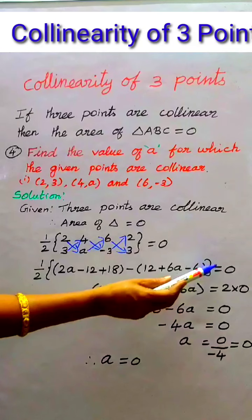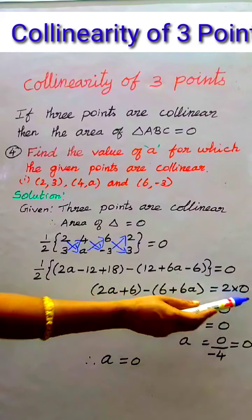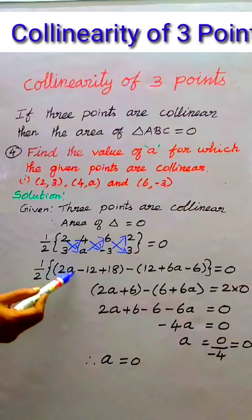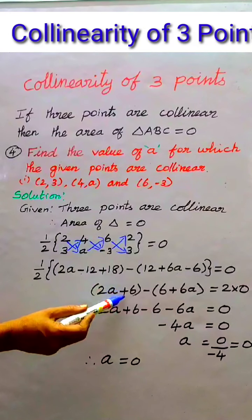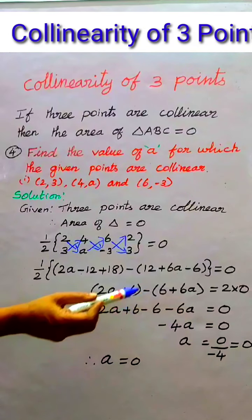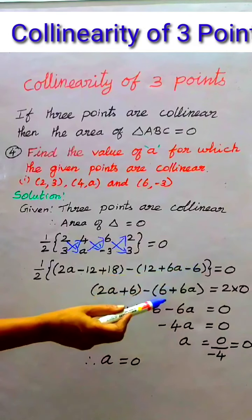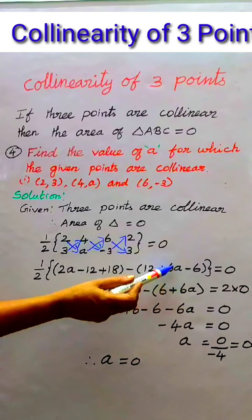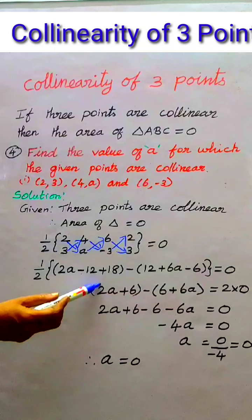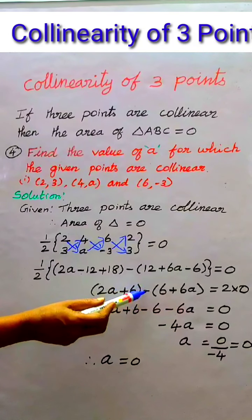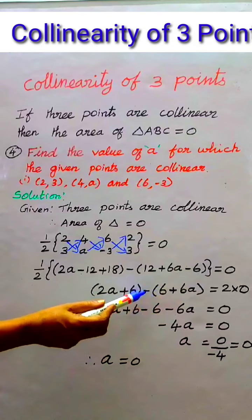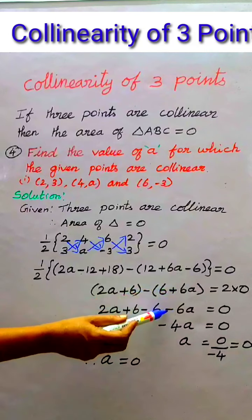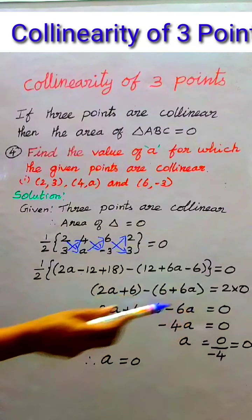Here, 2A minus 12 plus 18 equals 6, so we have 2A plus 6 minus (6 plus 6A). Multiplying this minus by these two terms: minus into plus is minus 6, minus into plus 6A is minus 6A, equals 0.